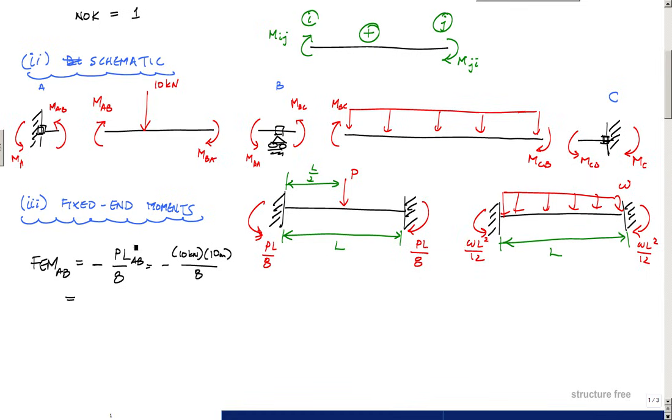That tells me the fixed end moment for AB is minus 12.5 kilonewton-meters. The fixed end moment for BA, which is on this side - look at M_BA the way I've drawn it - is in the same direction as the fixed end moment on the right for a concentrated load PL over 8. So that's positive PL_AB over 8, which is plus 12.5 kilonewton-meter.